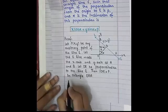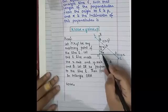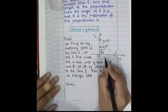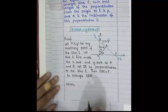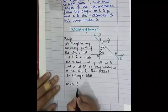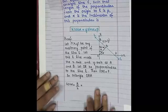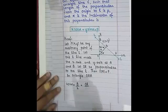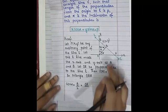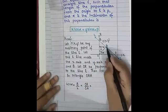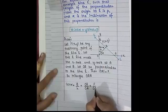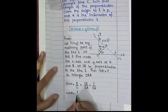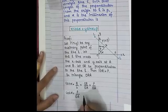In triangle ORA, considering cos alpha: we identify the perpendicular, base, and hypotenuse. cos alpha equals base over hypotenuse, which is OR over OA. Since OR equals P, we get cos alpha equals P over OA.